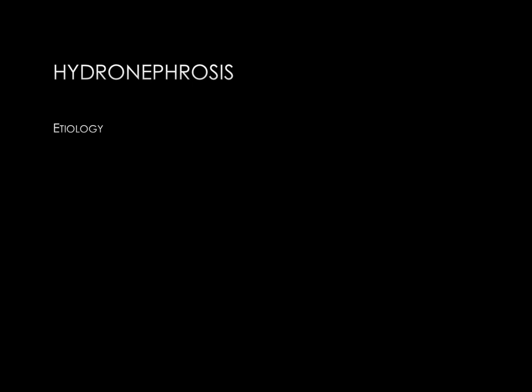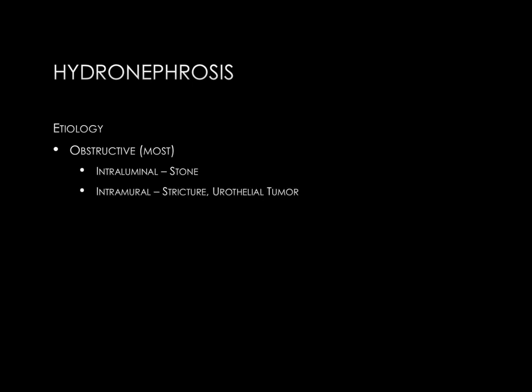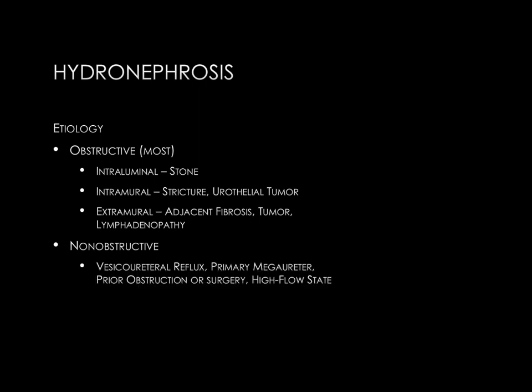The etiology of hydronephrosis can be classified into obstructive and non-obstructive forms. Obstructive is the most common, and the most common form of obstruction is a renal stone — an intraluminal process. An intramural process includes stricture or urothelial tumor within the ureter or collecting system. An extramural process is some structure outside the ureter compressing it, such as adjacent fibrosis, tumor, or lymphadenopathy. Non-obstructive causes include vesicoureteral reflux, primary mega ureter, prior obstruction or surgery, or a high flow state.